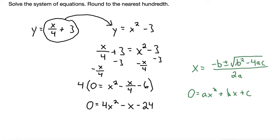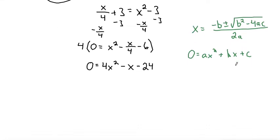We can identify in our problem that a is equal to 4 since that's the coefficient of the x squared term, b is equal to negative 1 because that's the coefficient of the x, and c is equal to negative 24.